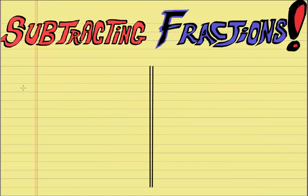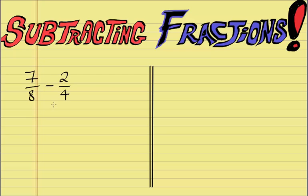Now let's take a look at how we subtract fractions. This is the easiest possible way that you can do these. Say if we had 7/8 and we wanted to take away 2/4. What we do is we first multiply the denominators together. So 8 times 4 is 32. We write that in the denominator's position.